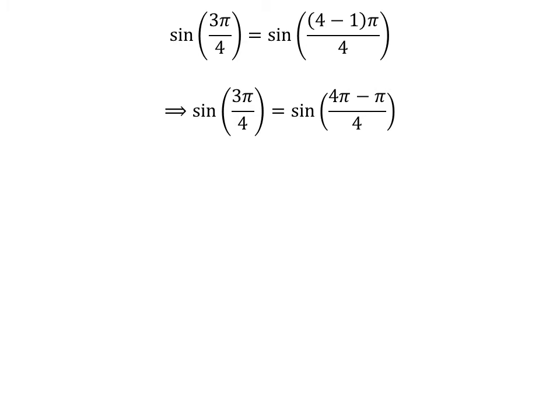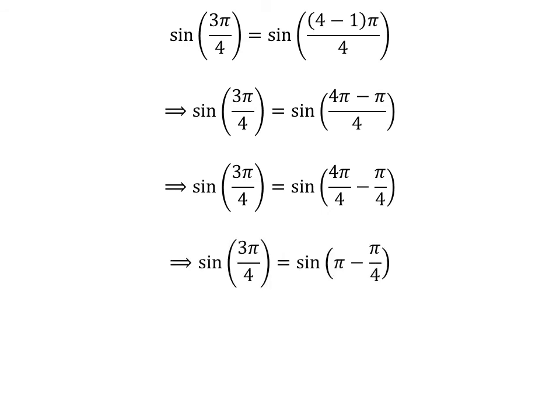Expanding the numerator, we get sine of 3 times pi upon 4 is equal to sine of 4 times pi minus pi upon 4. The fraction 3 times pi upon 4 can be expressed as the difference of two fractions, 4 times pi upon 4 and pi upon 4. Cancelling out the common factor in the numerator and the denominator gives us sine of 3 times pi upon 4 is equal to sine of pi minus pi upon 4.